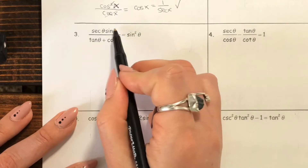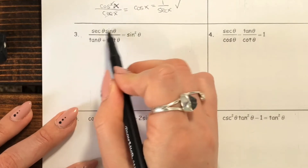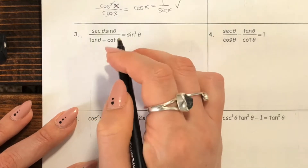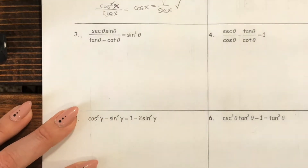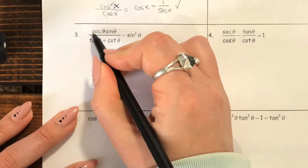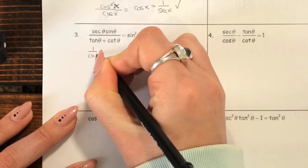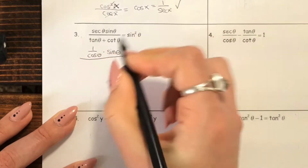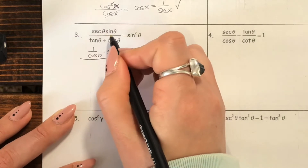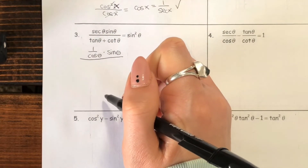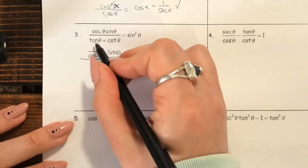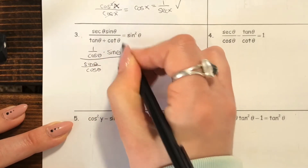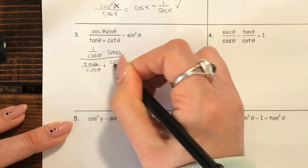On this next example, this is definitely the messier looking side, so we're going to take this left side and try to get it to turn into sine squared. When you have these messy looking fractions, still approach them the same way — turn things into sines and cosines where you can. So secant I would switch into one over cosine. And then we have the sine still, we'll just keep the sine. So there's the numerator. Tangent and cotangent in the denominator — tangent is sine over cosine, and cotangent is the opposite, they're reciprocals, so cosine over sine.